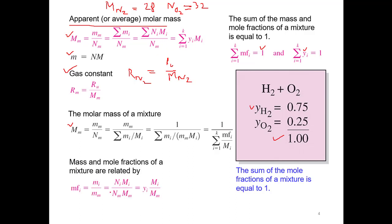The relationship between mass fraction and mole fraction: the mass fraction of an individual component equals mi/Mm, where mi equals ni×Mi and Mm equals Nm×Mm. This simplifies to mole fraction times the ratio Mi/Mm, giving the conversion between mass fraction and mole fraction.